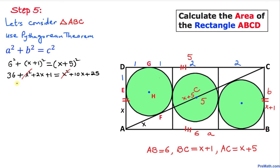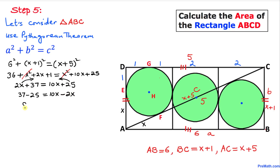Combining like terms, the left side gives us 2x + 37 equal to 10x + 25. Moving 2x to the right and 25 to the left, we get 37 minus 25 equals 10x minus 2x, so 8x equals 12. Dividing both sides by 8 to isolate x, x turns out to be 3 over 2.